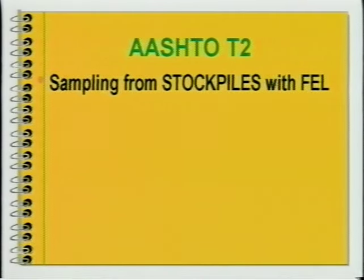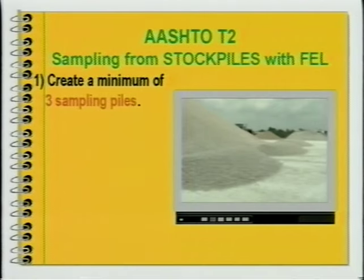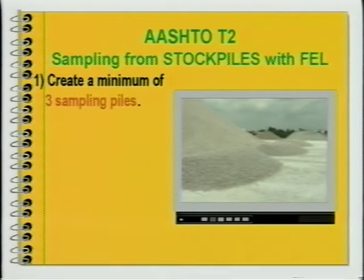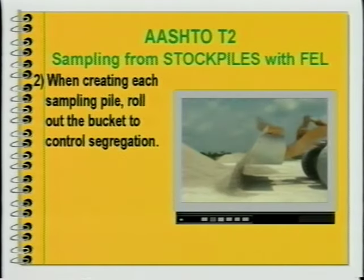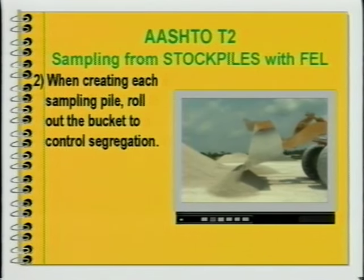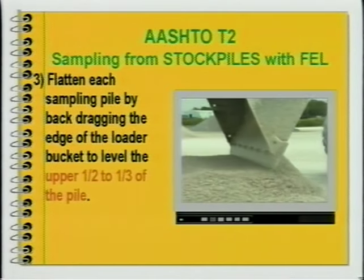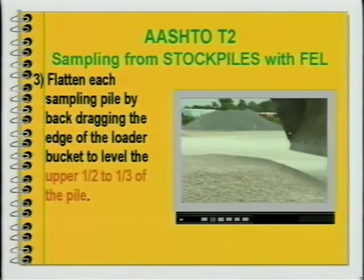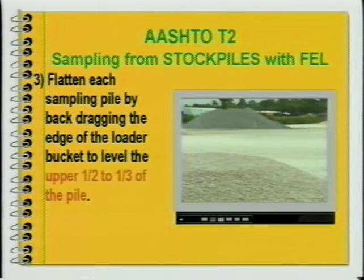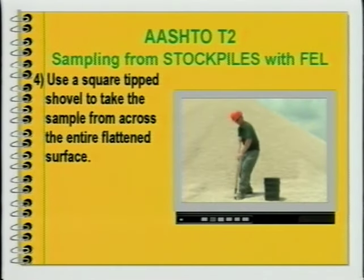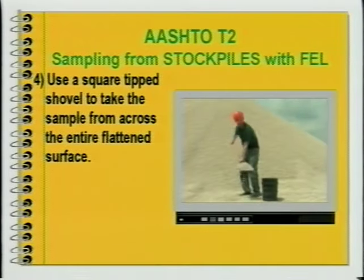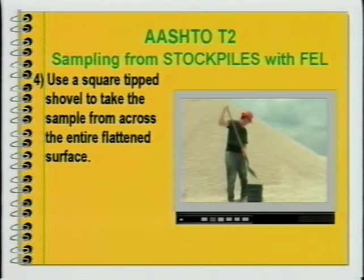To review the procedure for sampling from a stockpile using a front-end loader: 1. Create a minimum of three sampling piles, obtaining material from a minimum of three locations across the face of the stockpile. 2. When creating each sampling pile, roll out the bucket to control segregation. 3. Flatten each sampling pile by back-dragging the edge of the loader bucket to level the upper one-half to one-third of the pile. 4. Use a square-tip shovel to take the sample from across the entire flattened surface.